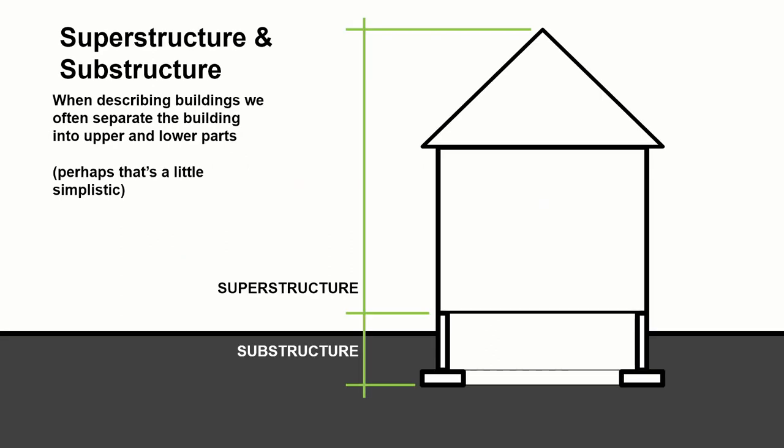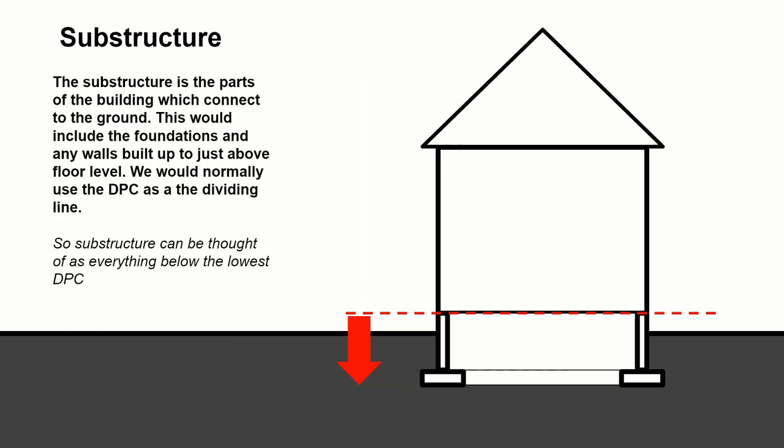When we're talking about buildings, it's sometimes convenient to describe them in terms of collections of components which become systems. One of the ways that we talk about buildings, especially domestic buildings, is superstructure and substructure. Superstructure can be thought of in a very simplistic way as the upper part of the building and substructure can be thought of as the lower part of the building. But we need a little bit more definition for this.